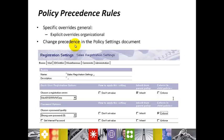Policy precedence rules: in general, a policy that is more specific to a given user takes precedence over a more general policy. For example, settings in an explicit policy take precedence over corresponding settings in an organizational policy. An administrator can change the precedence scheme by selecting Inherit or Enforce for individual settings. An administrator can also make the entire policy an exception policy, meaning that its settings will take precedence over corresponding settings in all ancestor policies.